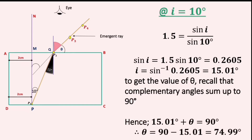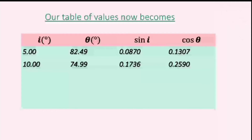So here, 15.01 plus theta will give me 90 degrees. Evaluating for theta, we find that theta is 74.99 degrees. Our table of values now becomes: when i is 10, theta is 74.99, sine i is 0.1736, and the cosine of theta is 0.2590.